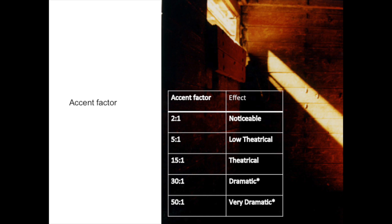It's always surprising when you say to people that if you put twice the amount of light that you've got in the background on that object, you're only just going to notice it. You'll hardly detect that there's any light there at all — it might not be in shadow, but it's not really going to stand out. For something to start to be noticeable you've really got to put something like five times the background light level onto it. And if you want a really dramatic theatrical effect, then you're up to 15, 30, and 50 to 1 ratios between object and background.